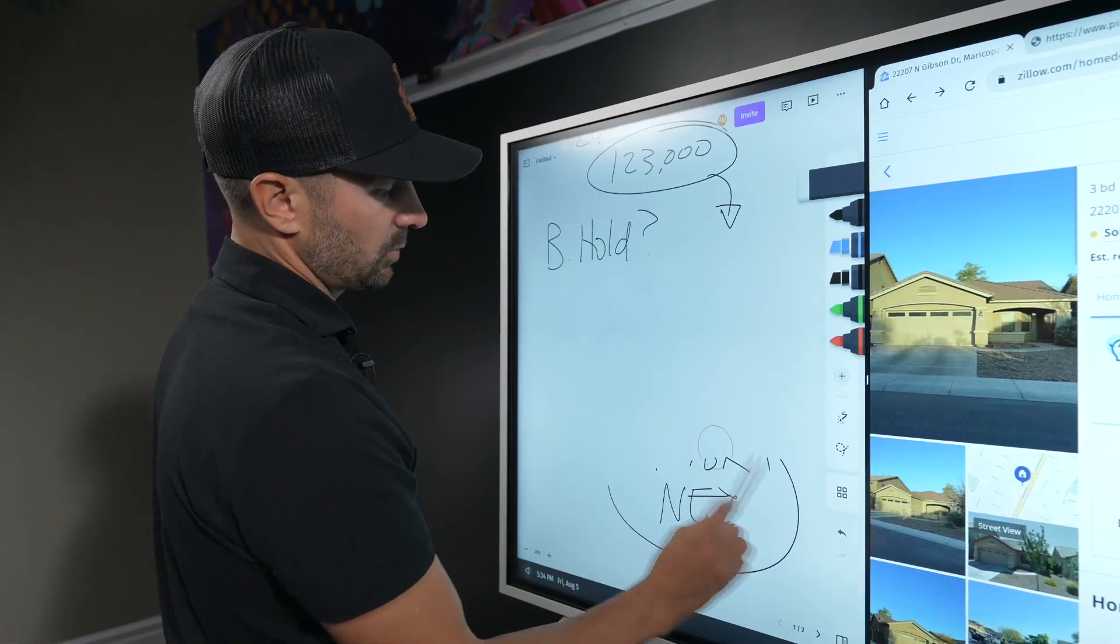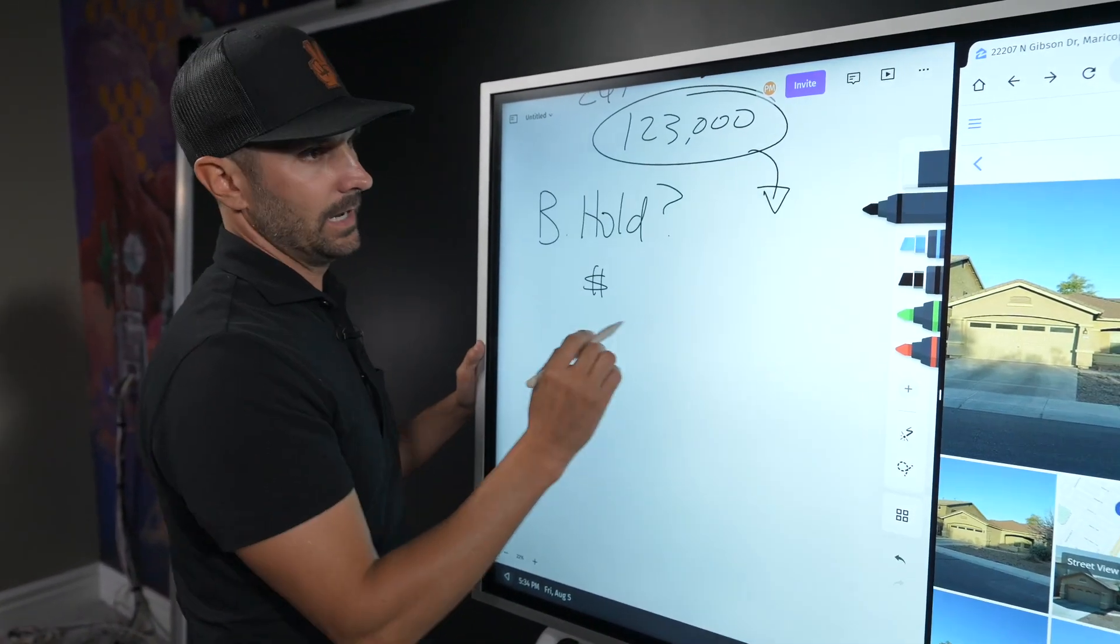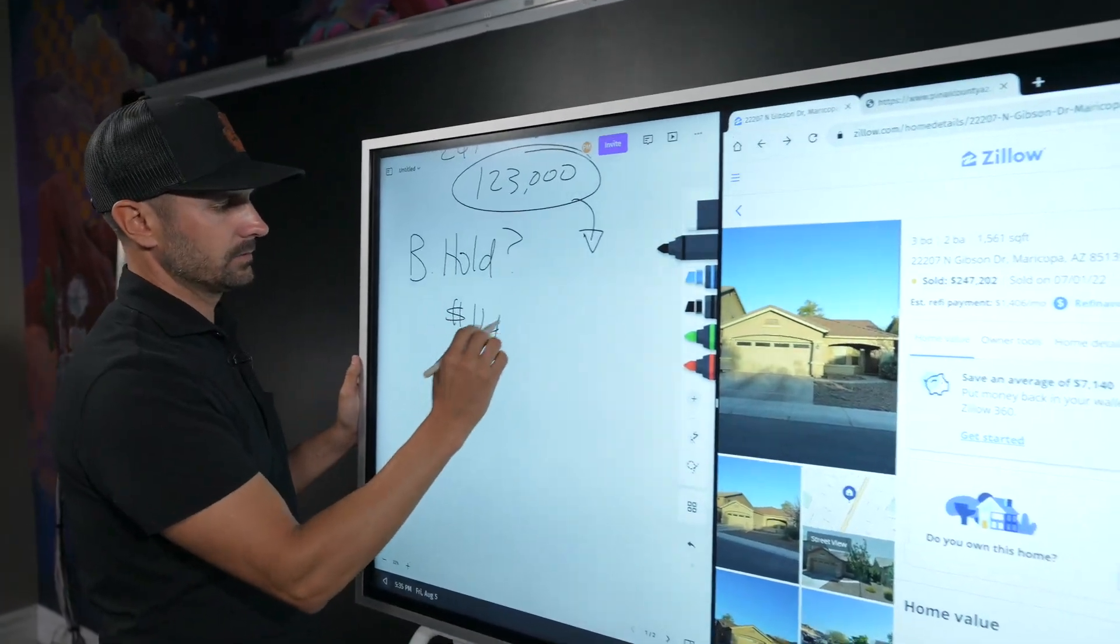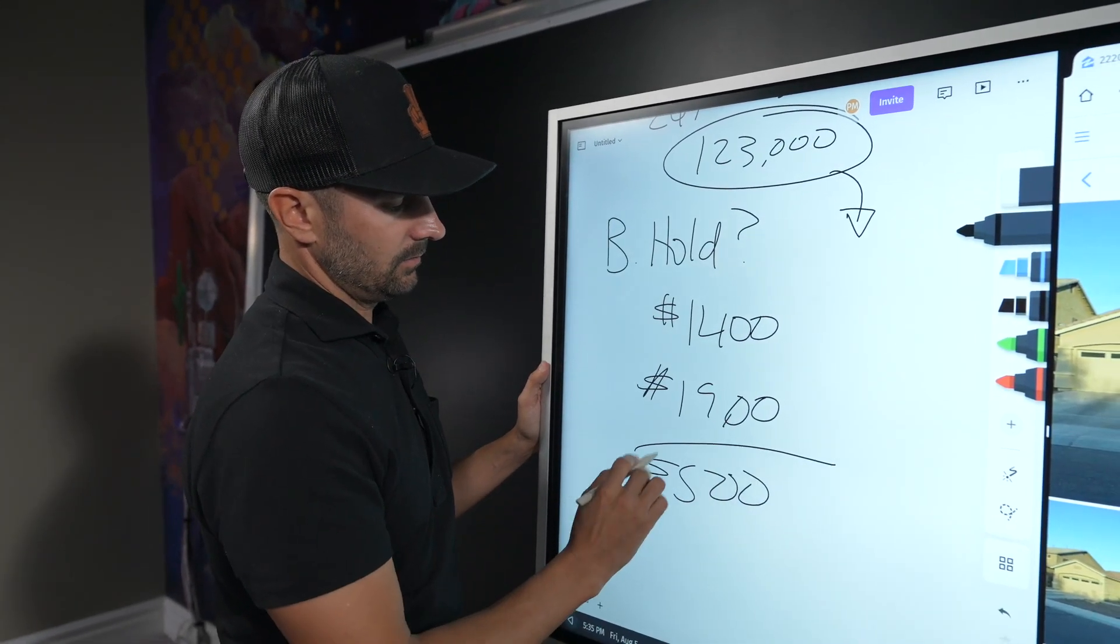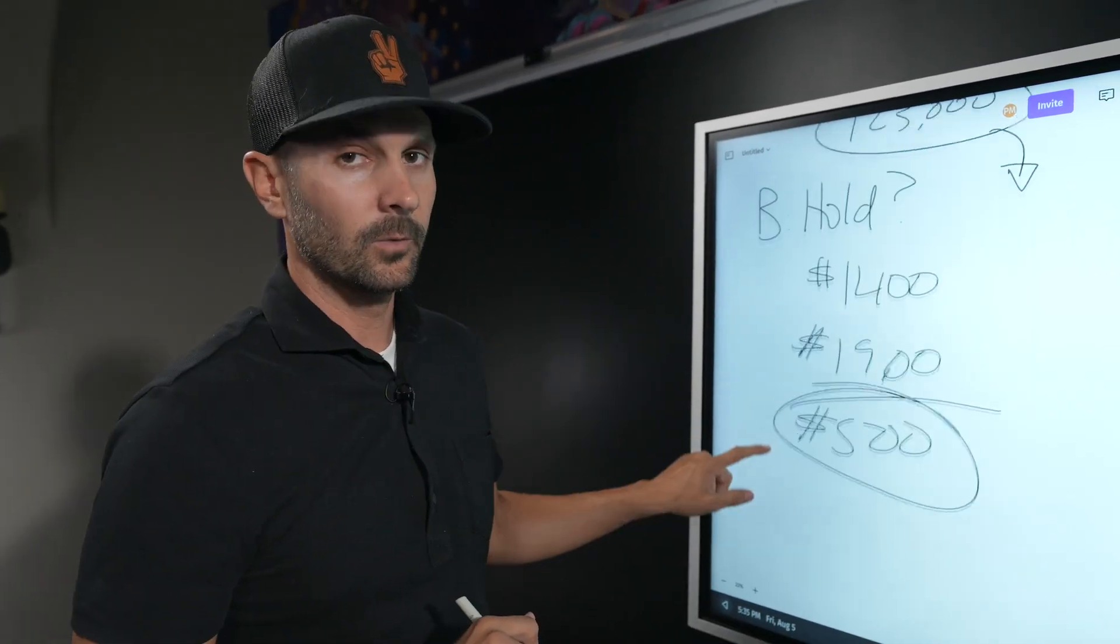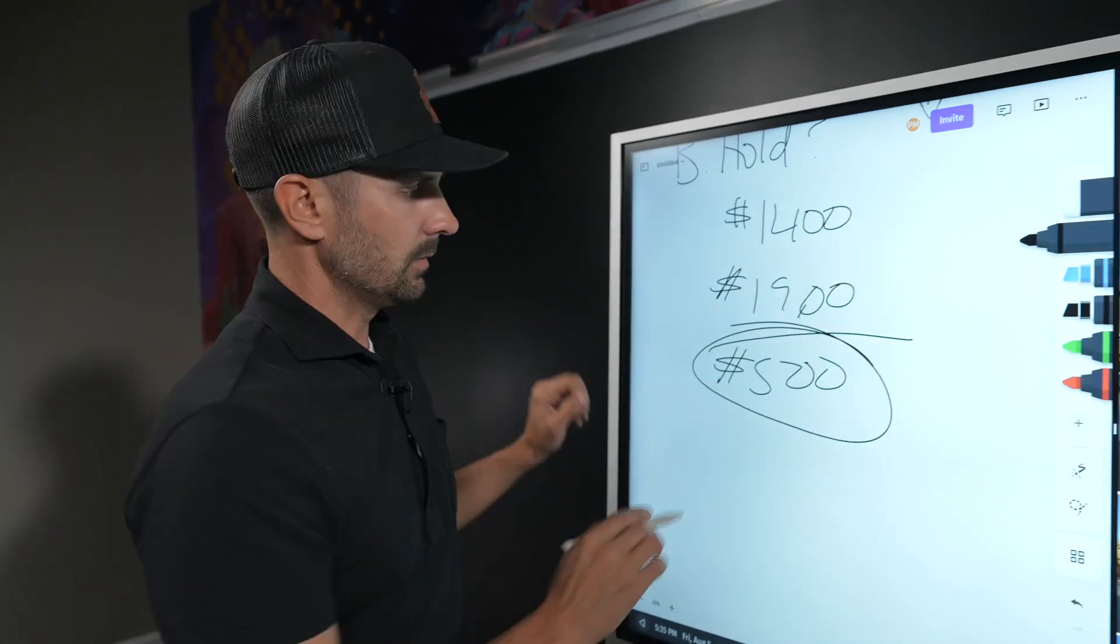Now in the hold section, this is interesting because this property normally does not cash flow. It breaks even. As you can see right here, the payment on this property is about $1,400. The good thing is I could rent it for $1,900, so you'd have a gross cash flow of $500 every single month.